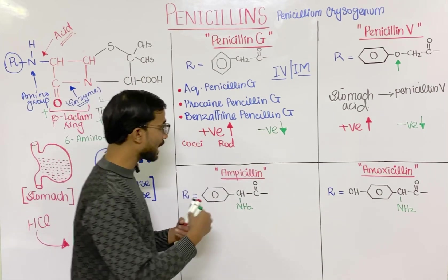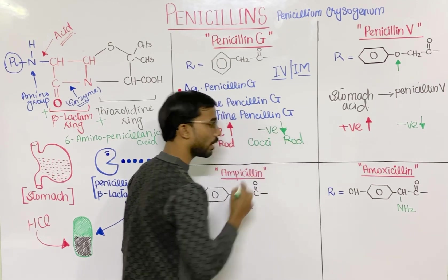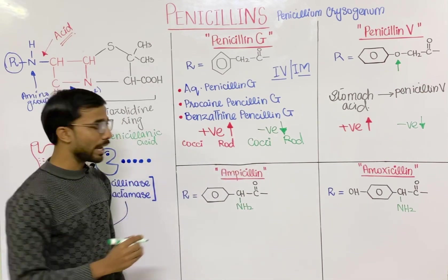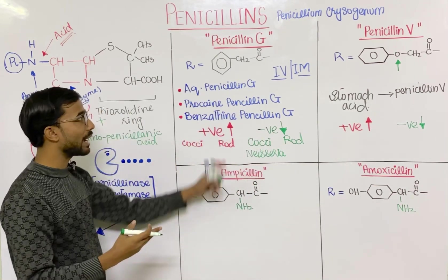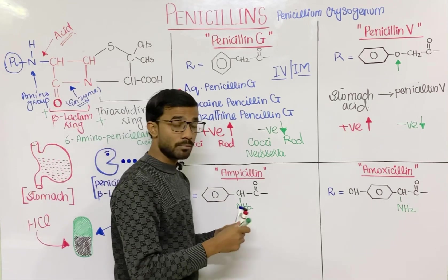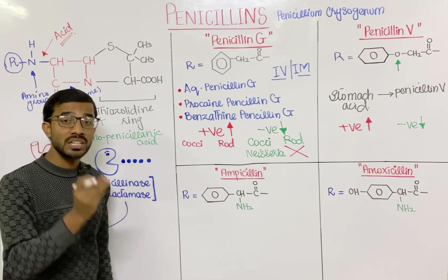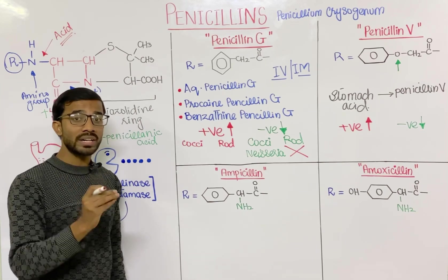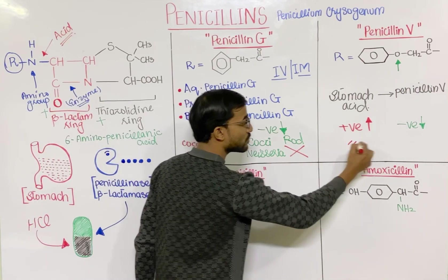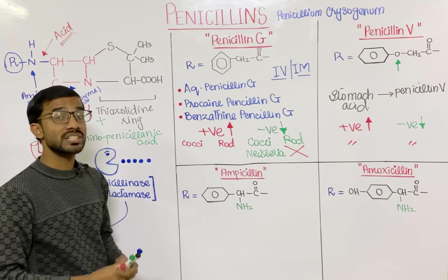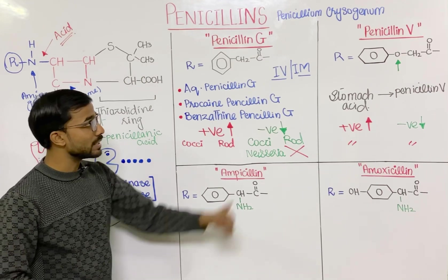In the gram-negative case, you will again see two forms: gram-negative cocci and gram-negative rods. In gram-negative cocci, you will see Neisseria species, which are actually susceptible to penicillin G. But, most importantly, gram-negative rods will not be susceptible to penicillin G. Penicillin G and penicillin V do not have any effect on gram-negative rods. Penicillin G has 5 to 10 times higher potency than penicillin V.